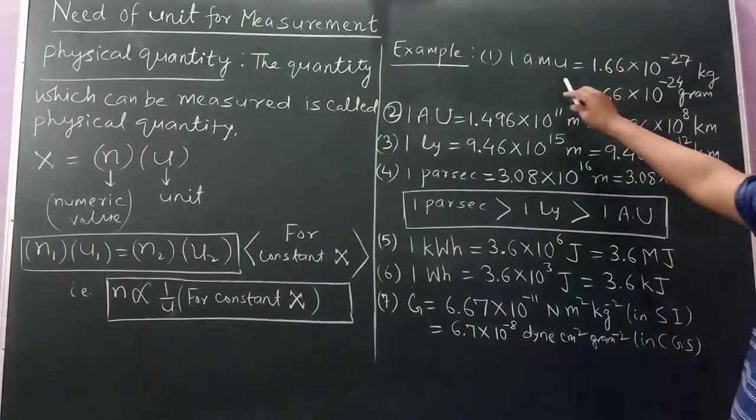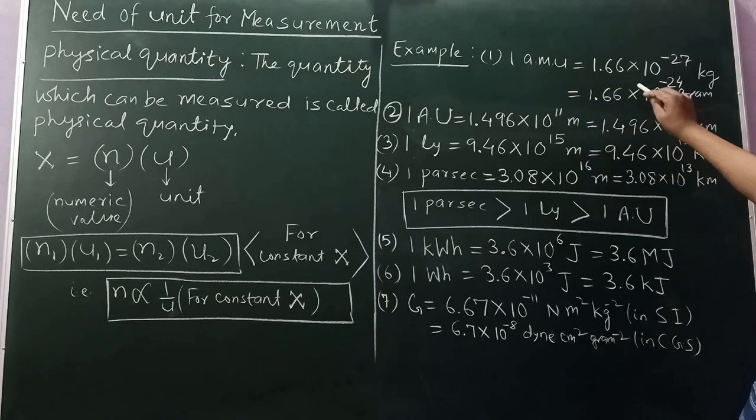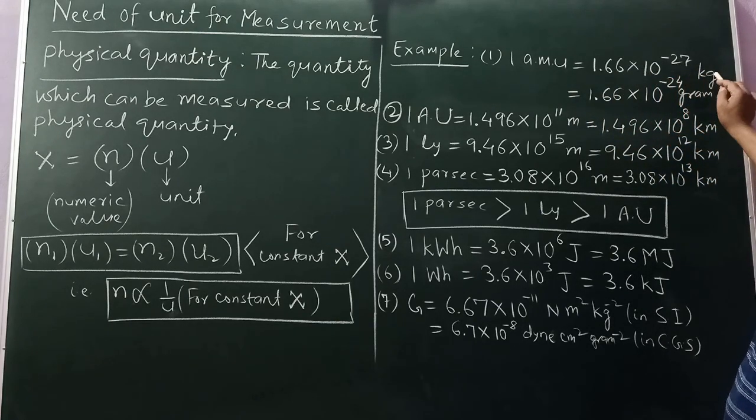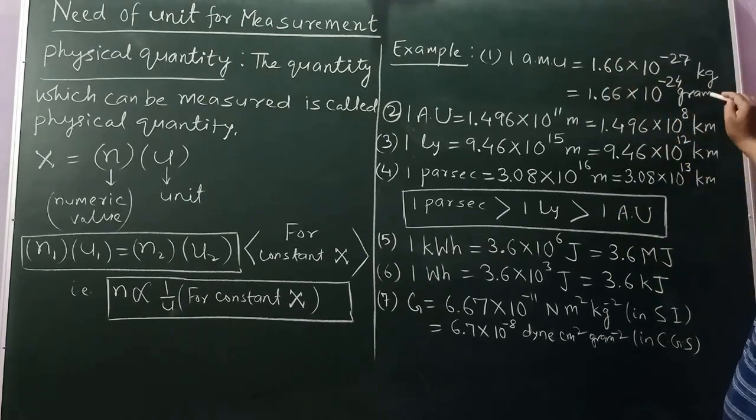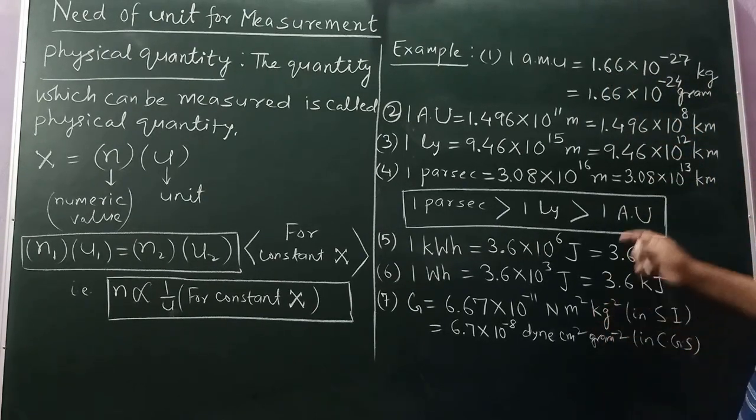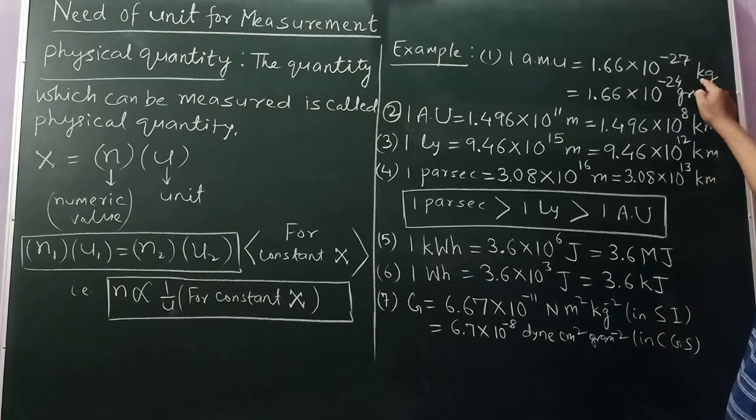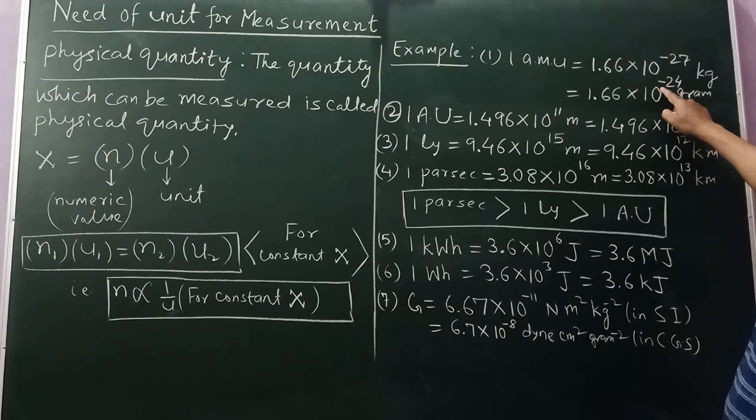Let's see with an example to make it clearer. Like one atomic mass unit is 1.66 into 10 to the power minus 27 kg. If we calculate this quantity in grams, we multiply by 10 to the power 3, then it becomes minus 24.